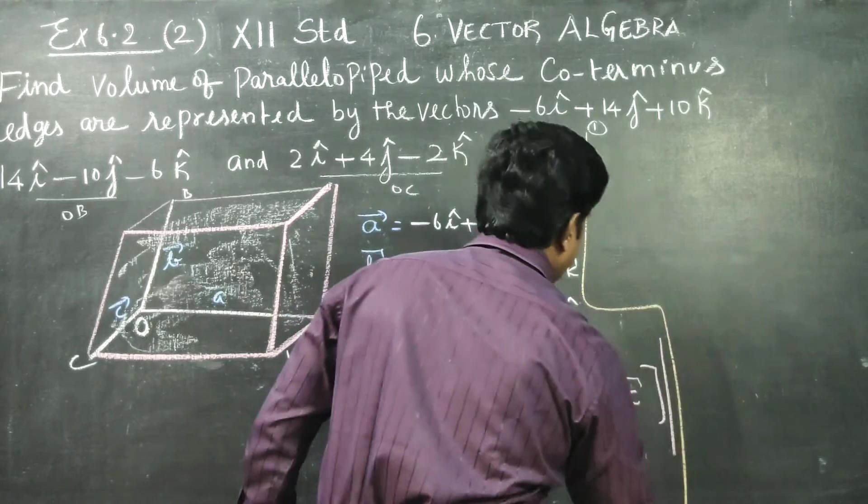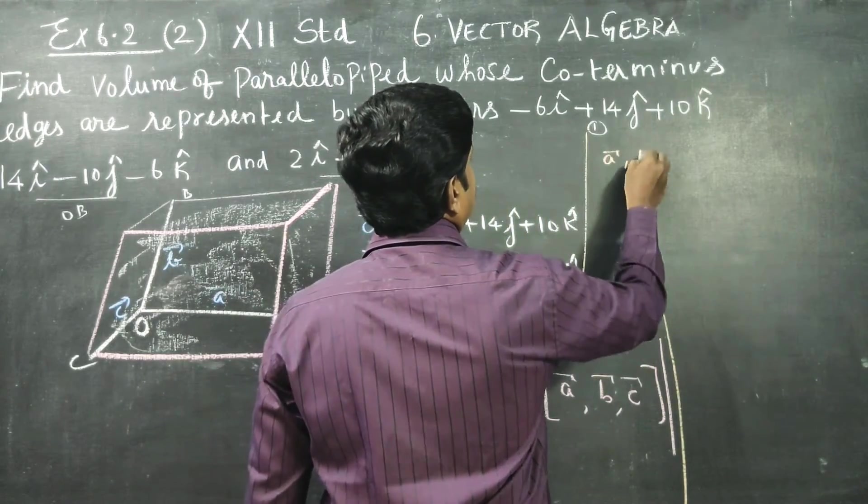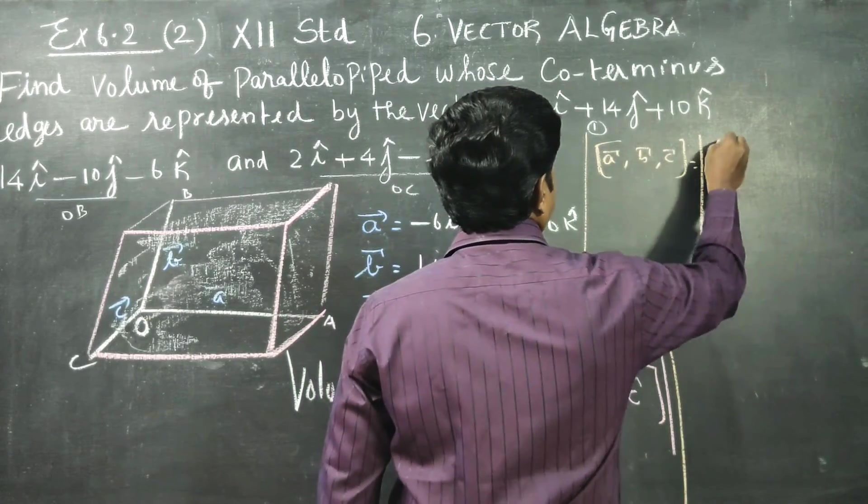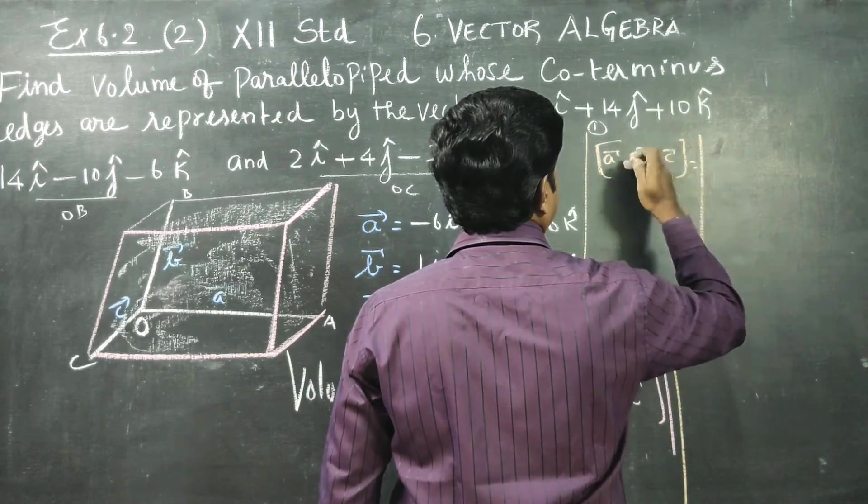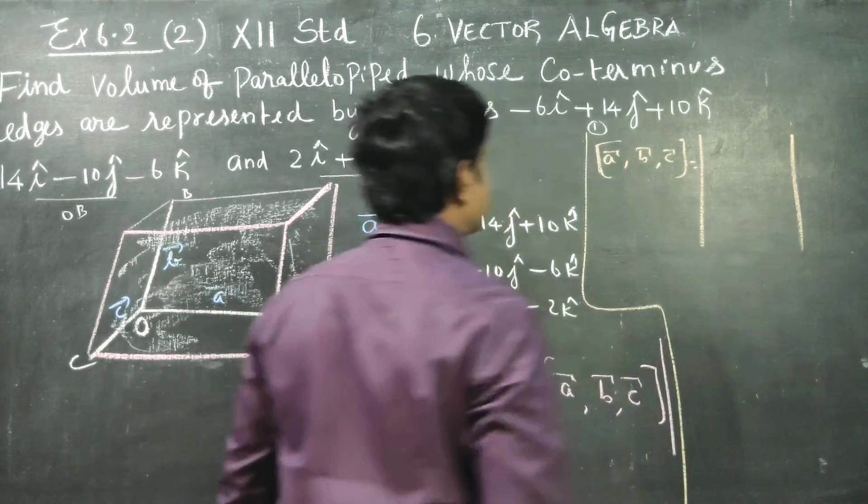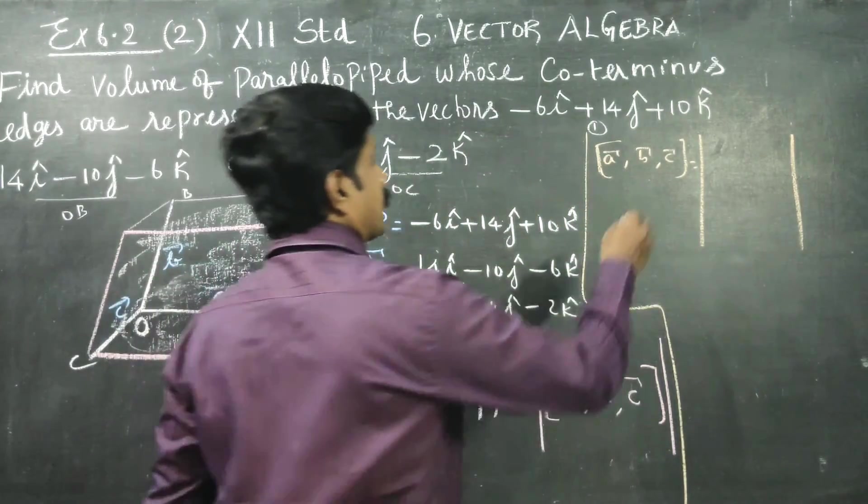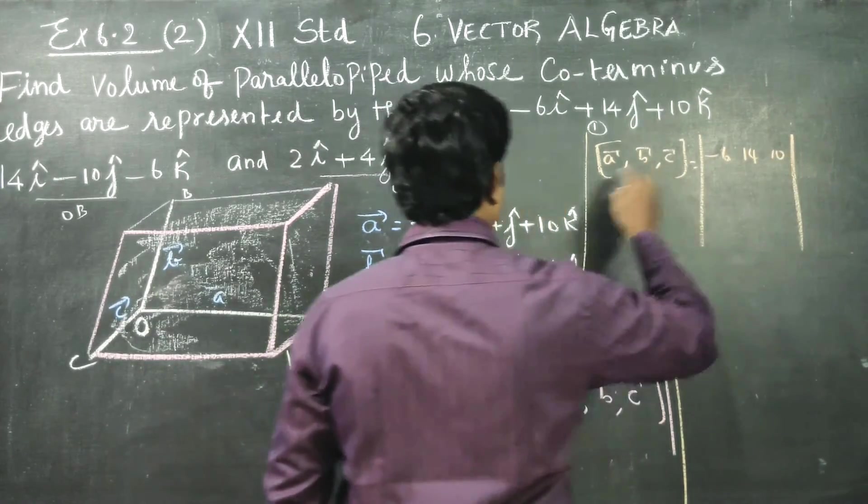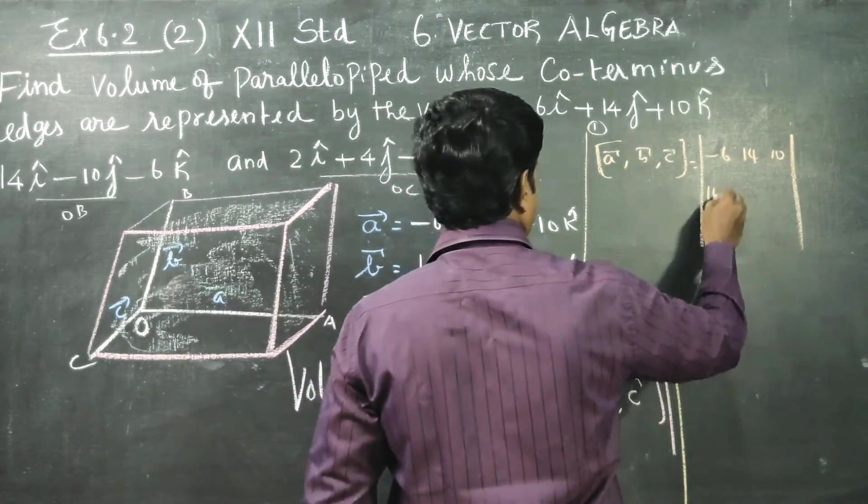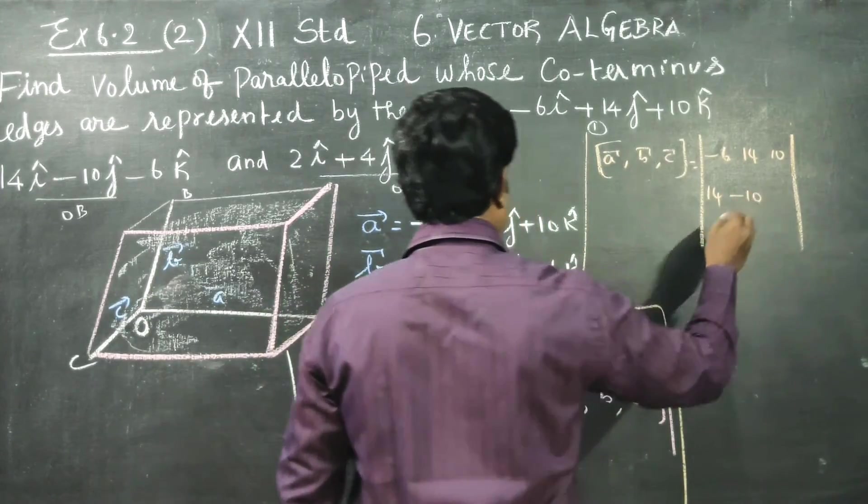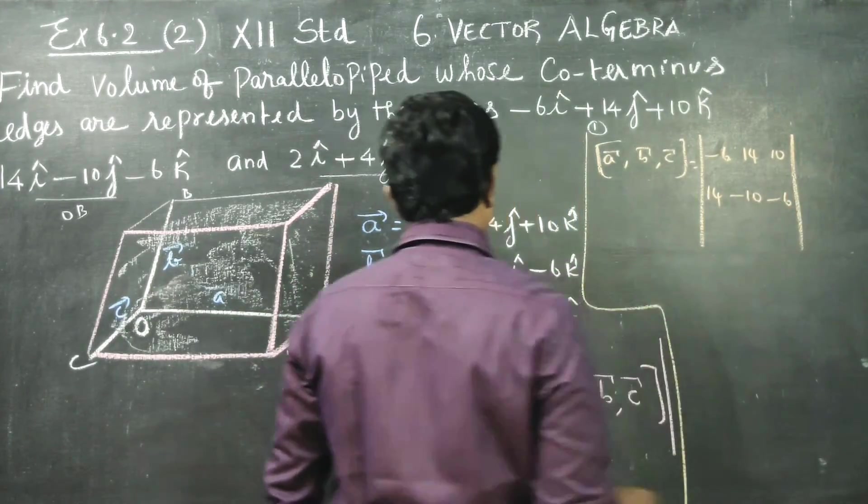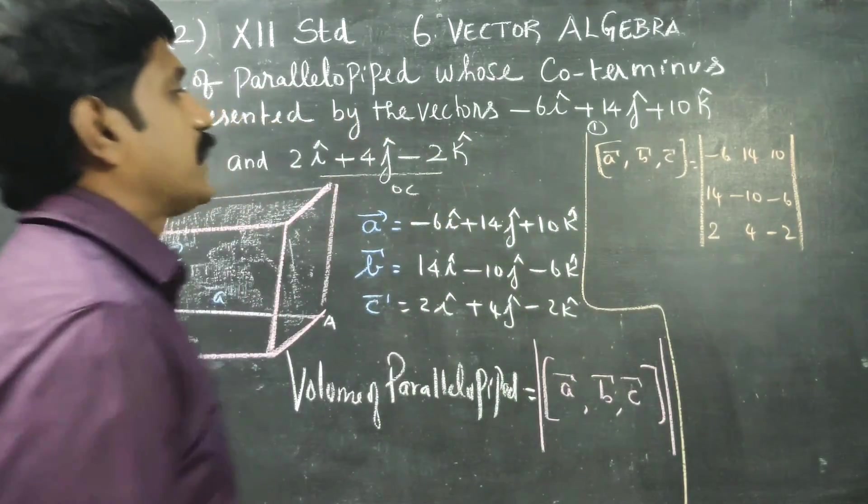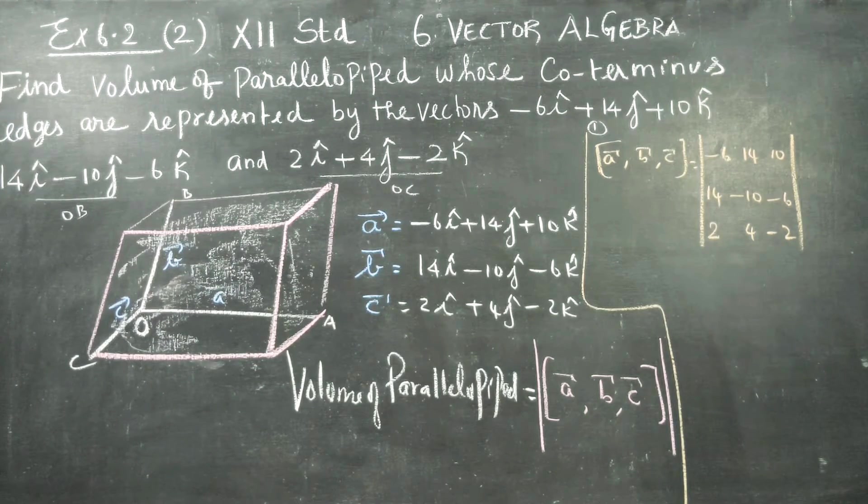Now I am going to find my a vector, b vector, c vector. Again a vector, b vector, c vector. a vector components: minus 6, 14, 10. b vector components: 14, minus 10, and minus 6. c vector components: 2, 4, minus 2.